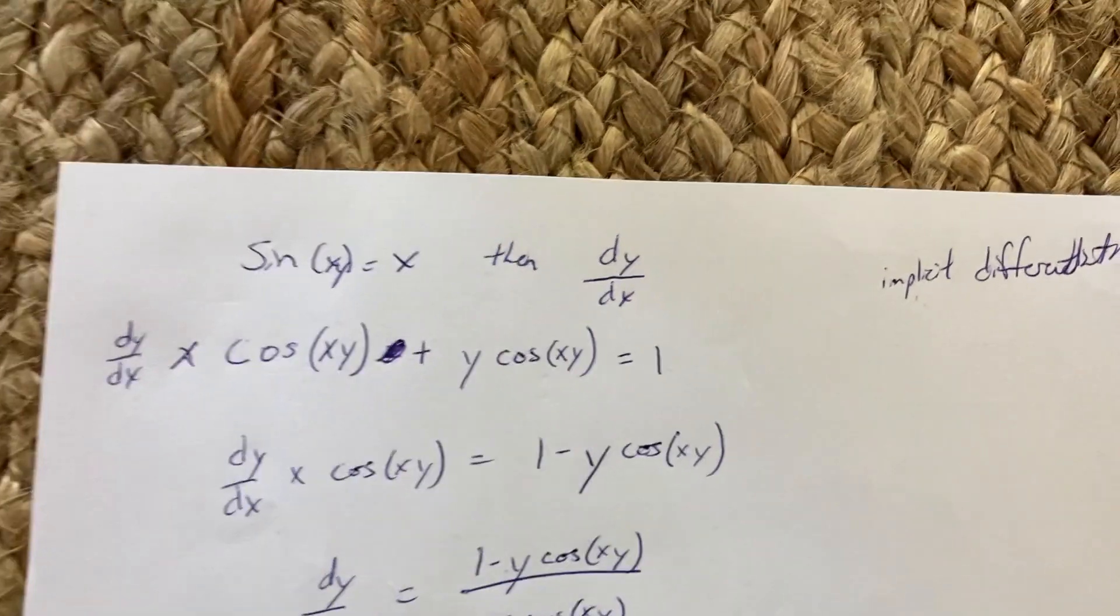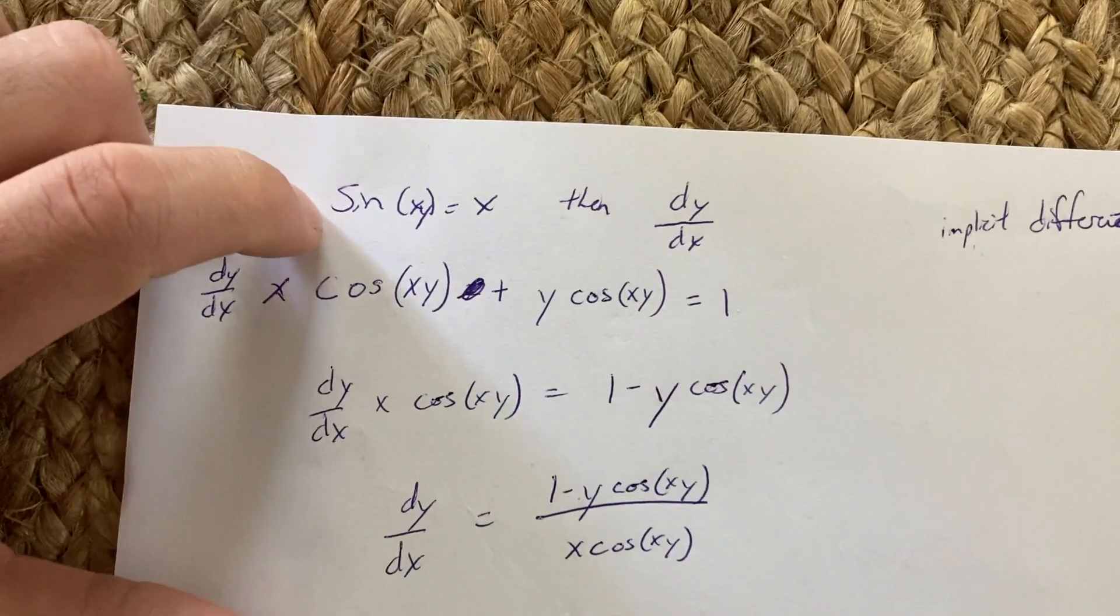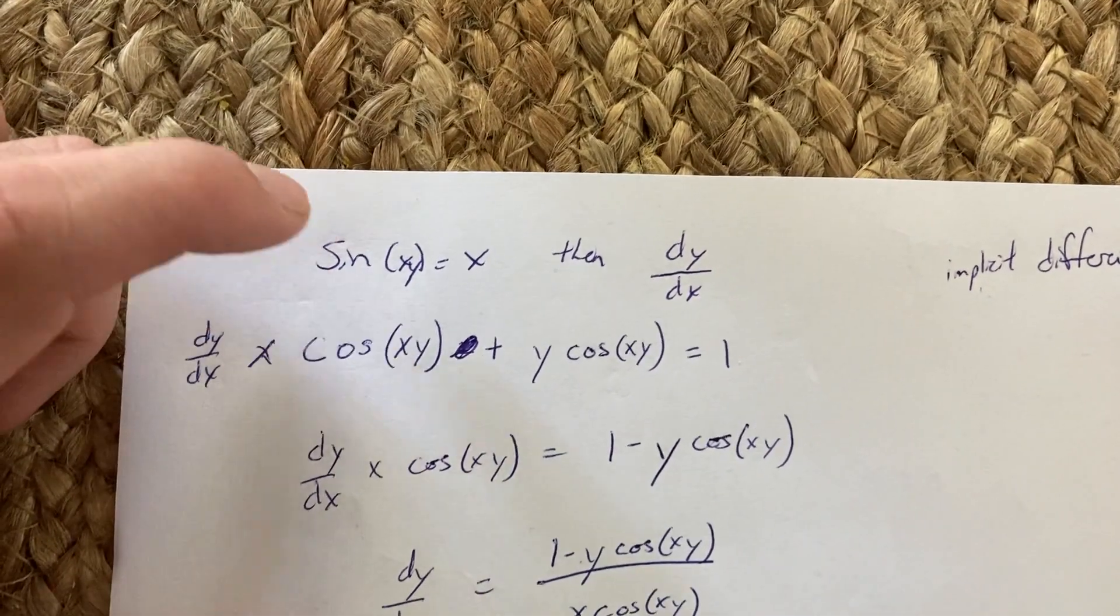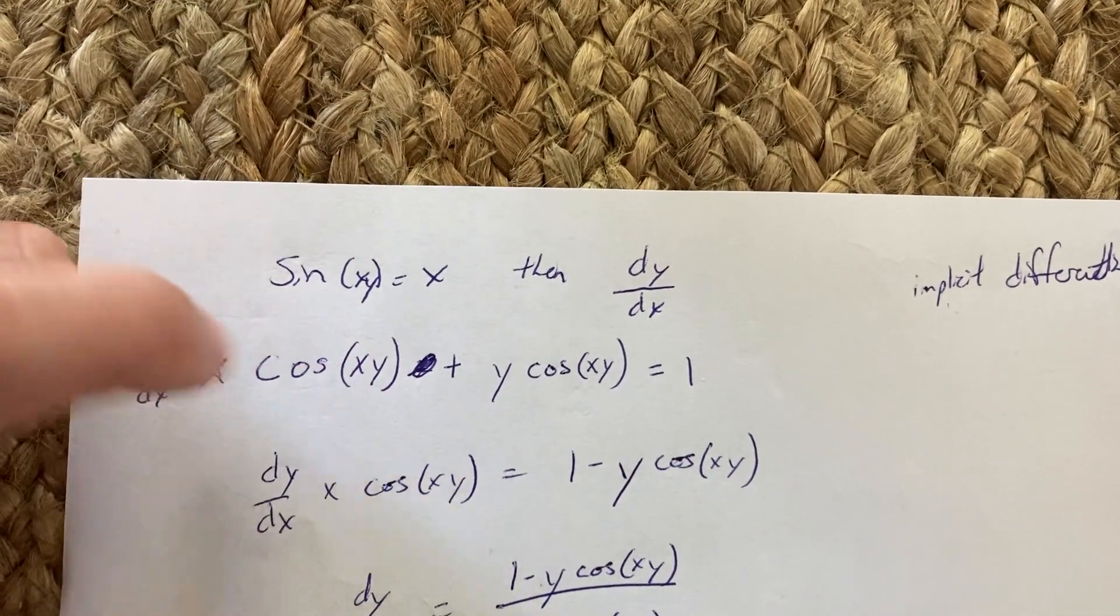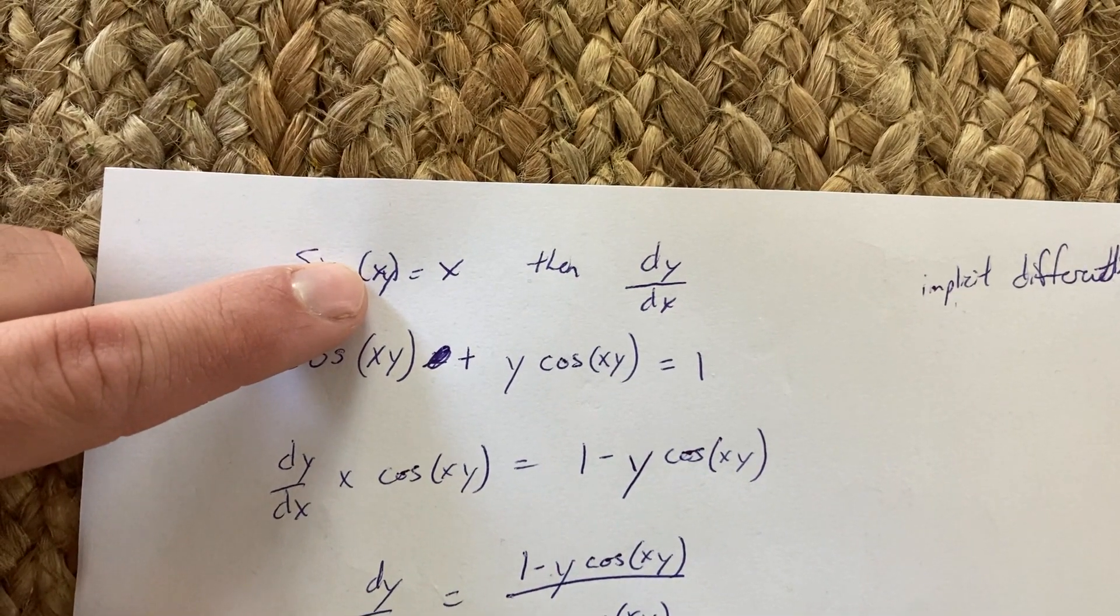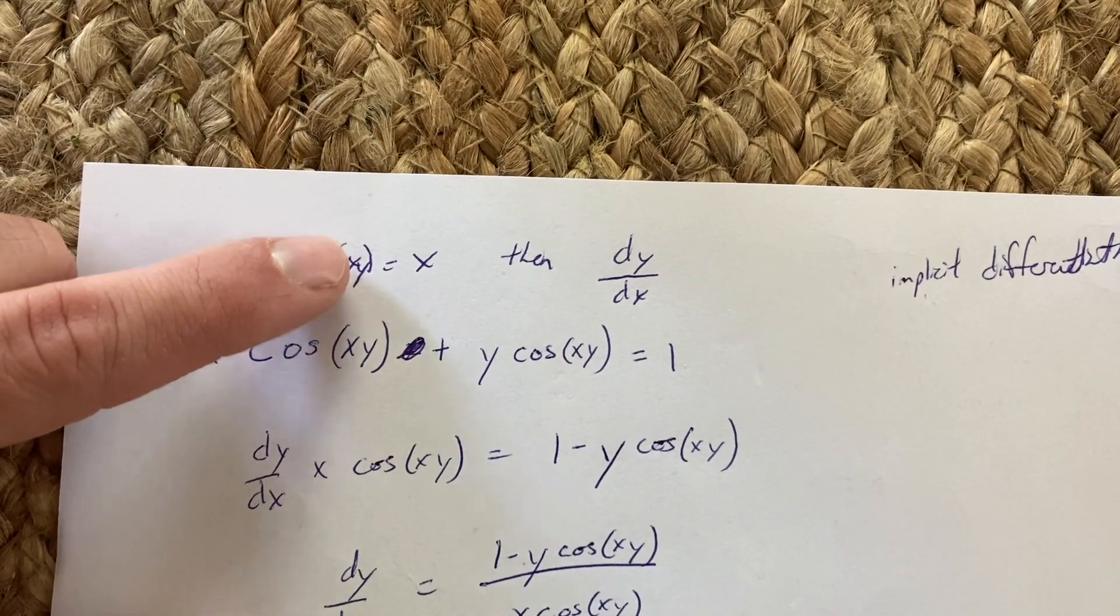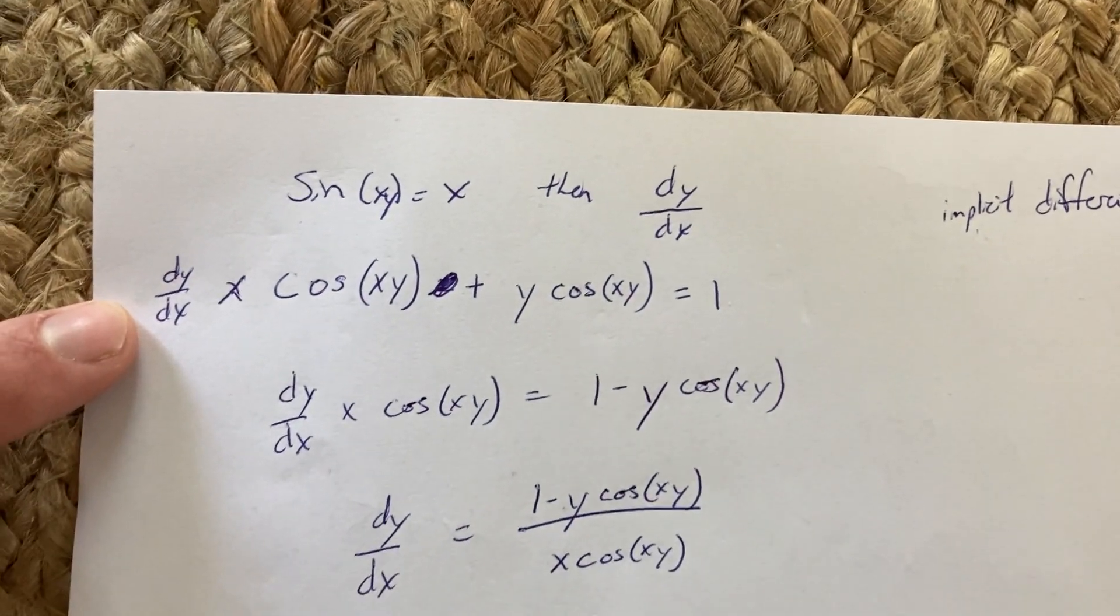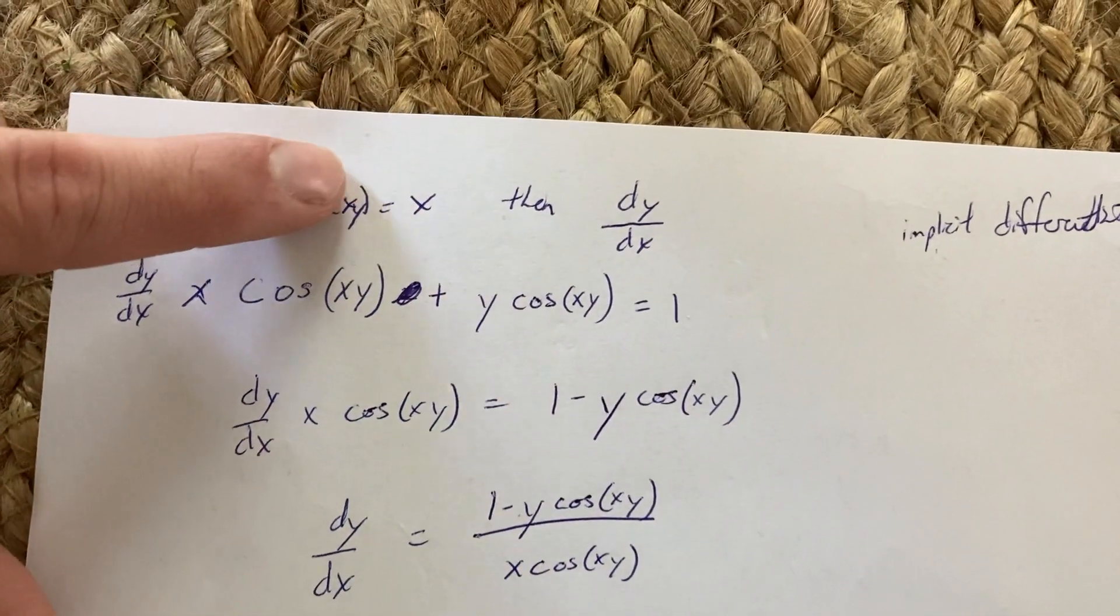Finding dy/dx: the derivative of sine is cosine, so we have cosine(xy). The derivative of xy with respect to y, trying to find dy/dx, is going to be dy/dx times x.